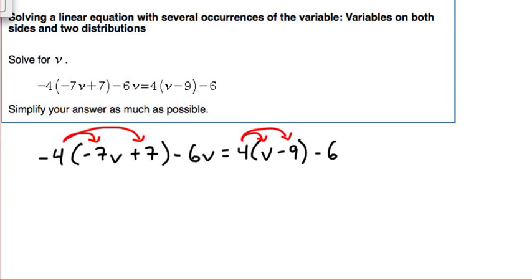So let's write that out here. Negative 4 times negative 7v, negative 4 times positive 7, and we're also going to add this minus 6v here equals 4 times v plus 4 times negative 9, and don't forget the negative 6.